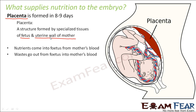The placenta connects the fetus with the uterine wall of the mother — the uterine wall being the wall of the uterus. As you can see, this entire structure is the uterus; this is the mother's body and this is the baby. The cord-like structure you see here is the umbilical cord, which arises from the baby's body and connects to the placenta, which in turn is connected to the uterus wall of the mother.